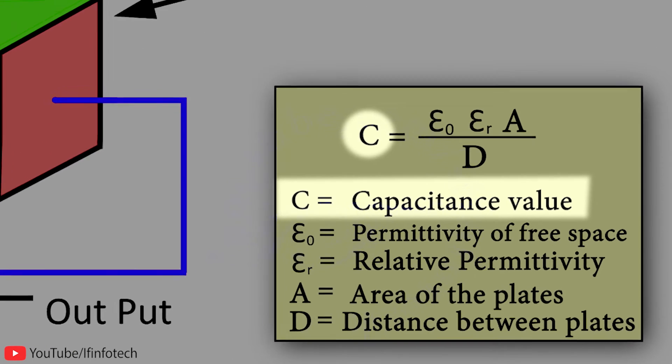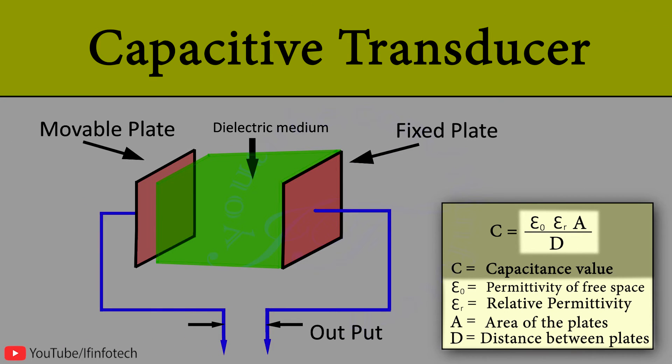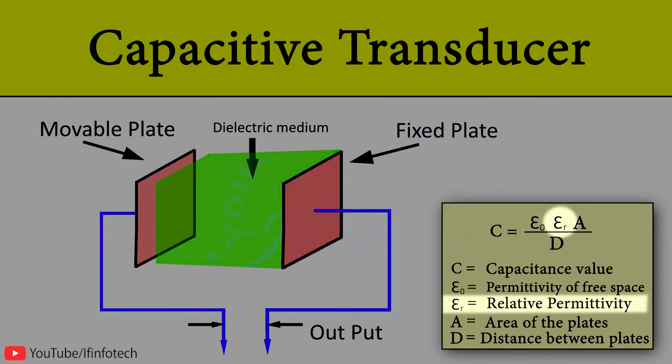According to this formula, variable capacitance value is dependent on four important parameters: distance between metal plates, area of plates, permittivity of free space, and relative permittivity of dielectric material. These parameters can vary capacitance value, and here dielectric medium and area of plates are kept constant.